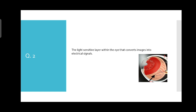The answer is the retina. Whenever the question mentions a light-sensitive layer, it is the retina. Moving on to question number three: a muscle that controls the shape of the lens to better focus the light on the retina.